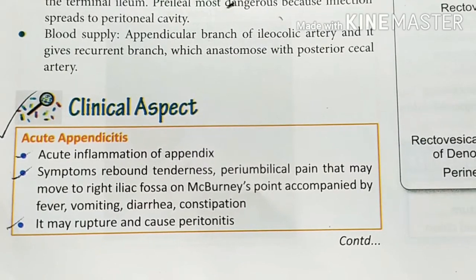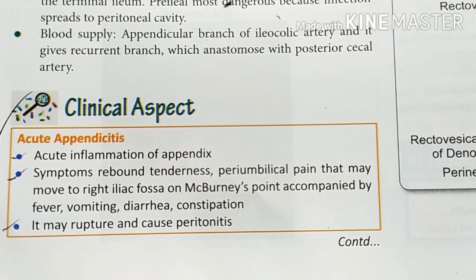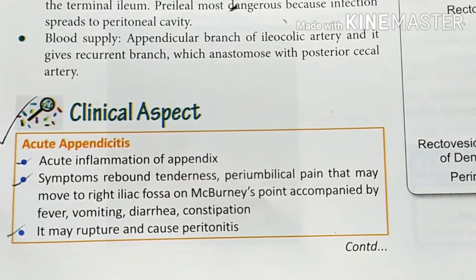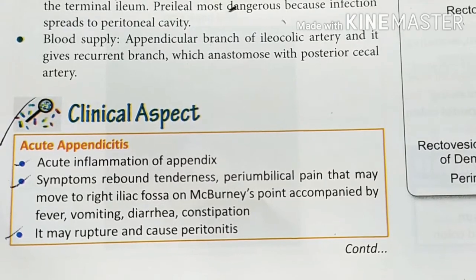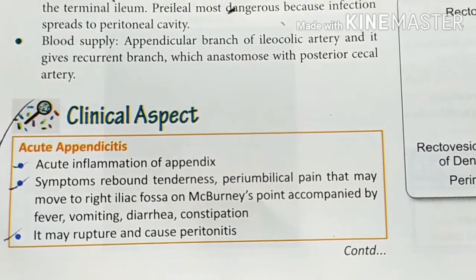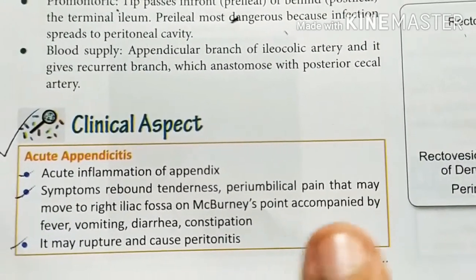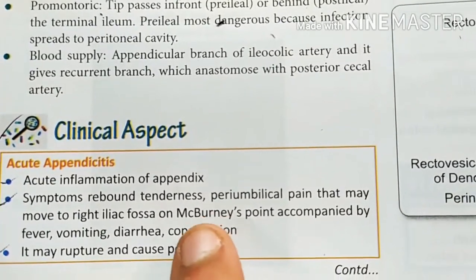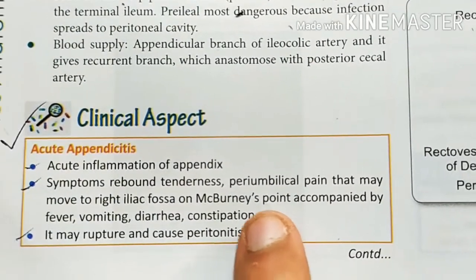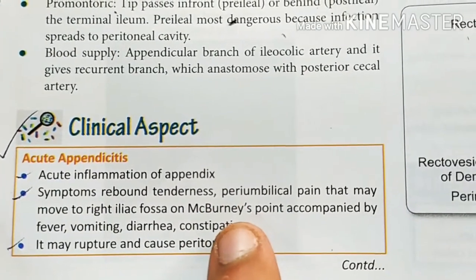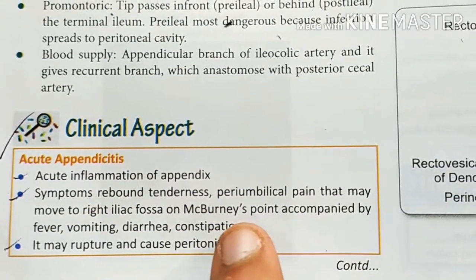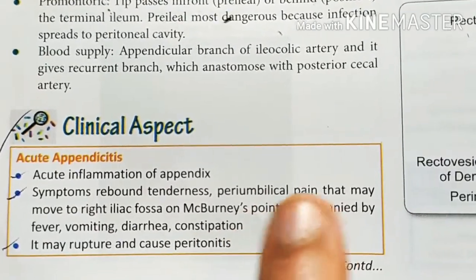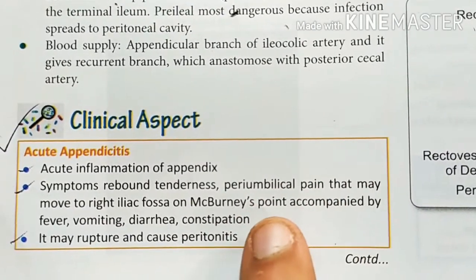What is appendicitis? 'Itis' means inflammation, so it is the inflammation of the appendix. And we have McBurney's point — this is the point where we feel the pain in appendicitis.